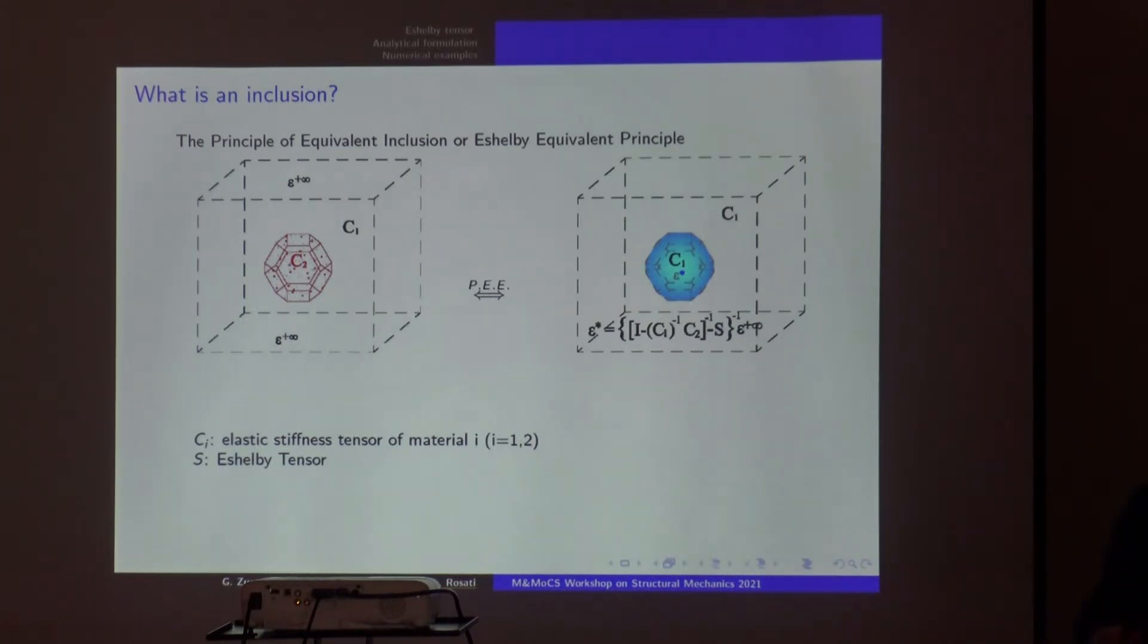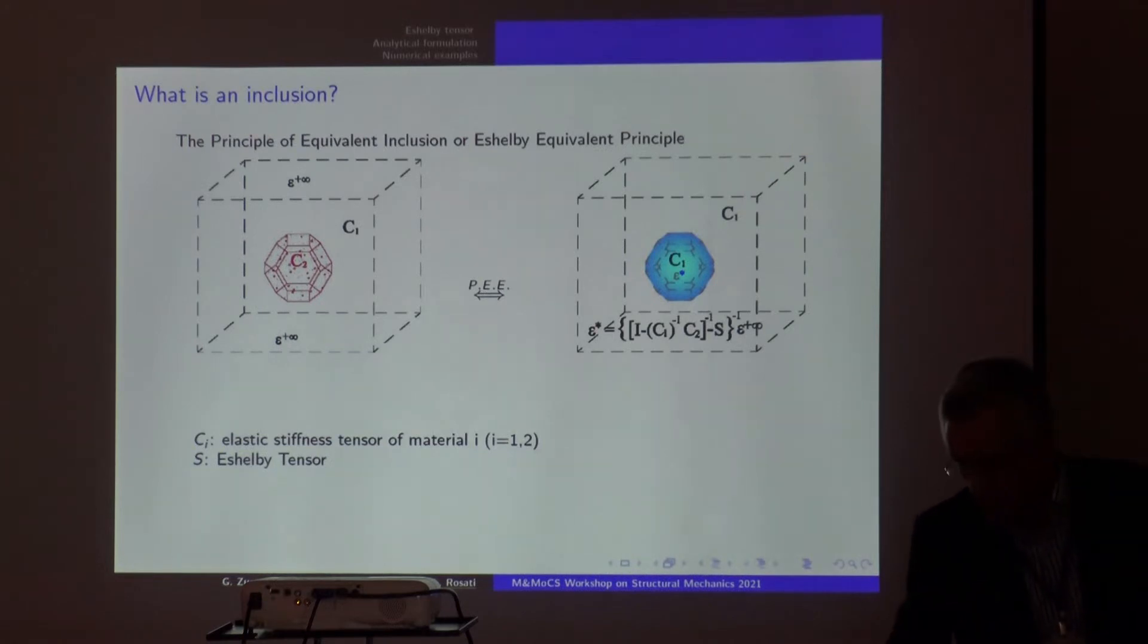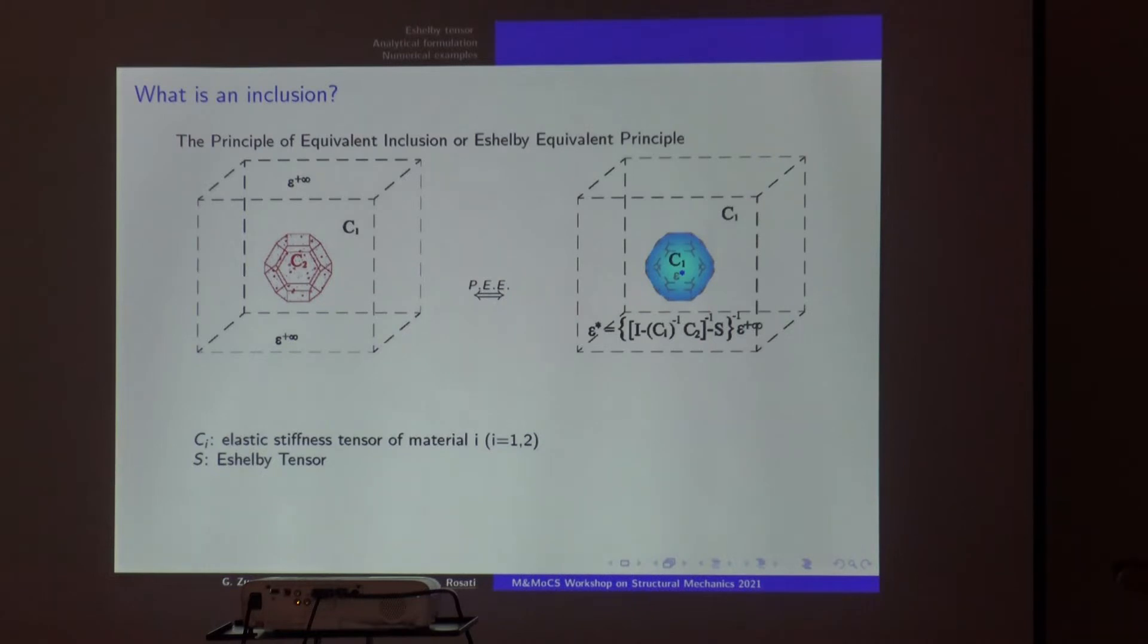Just to give an overview, if you don't know, these tensors allow you to take into account the effect of an inclusion within a hosting medium. You have an infinite medium with stress or strain conditions at infinity, with one material property C1 elastic tensor and another material, a small inclusion C2. You transform everything into one medium C1 in which you take into account the presence of this inclusion by concentrating in this geometric small inclusion an equivalent strain tensor.